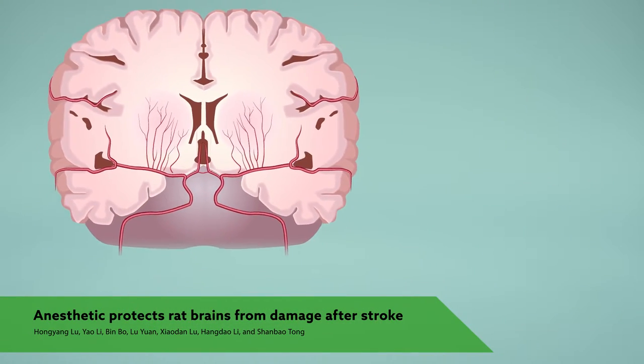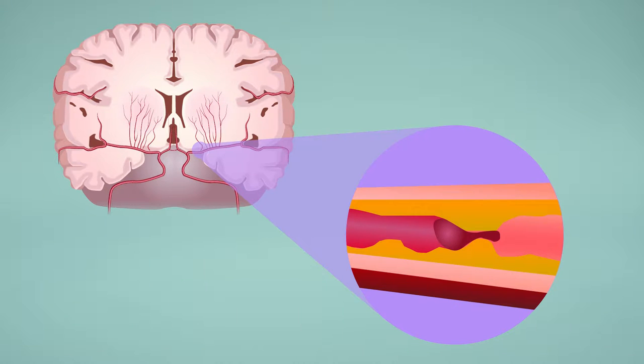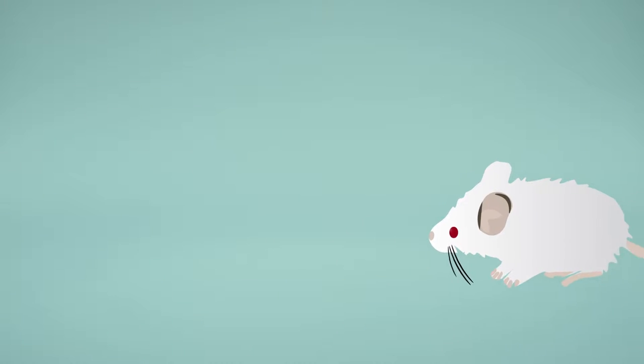Scientists have long thought that anesthetic drugs might protect the brain during a stroke, but there was no way to rigorously test this idea because triggering strokes in animals requires the use of anesthesia. But now a team of neuroengineers in China has come up with a workaround.